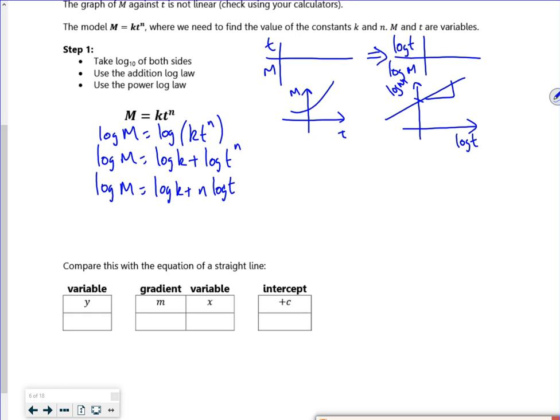With log t against log m. And I've got intercept and a gradient. So let's have a look on this then. So log m is going up. Log t is going across. That must mean that n is my gradient. So that's nice. Once you get that value, you don't need to do 10 to the power of it. It's just that value. And then I've got it. And then I've got log k is my intercept.